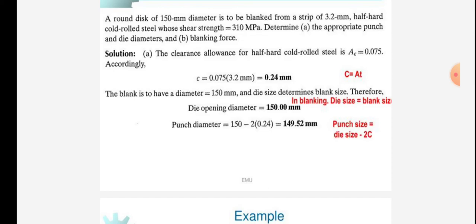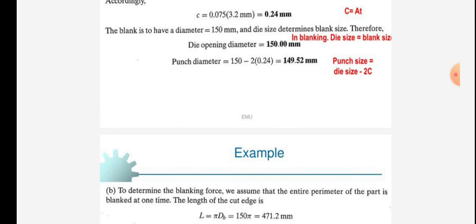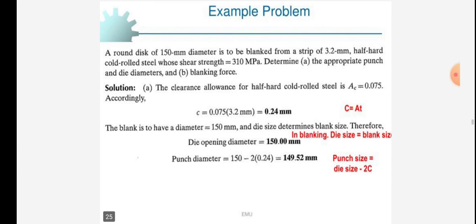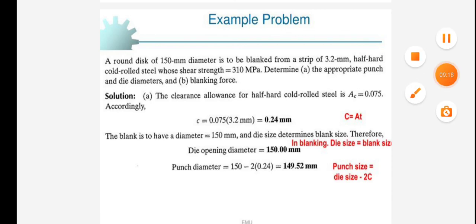Die size determines blank size, therefore in blanking, die size equals blank size. Die opening diameter equals 150 mm. Punch diameter equals 150 minus 2 times 0.24, equals 149.52 mm. Punch size is die size minus 2 times clearance. Thus we see the example of punch blank. We will see the next session in the next video lecture.